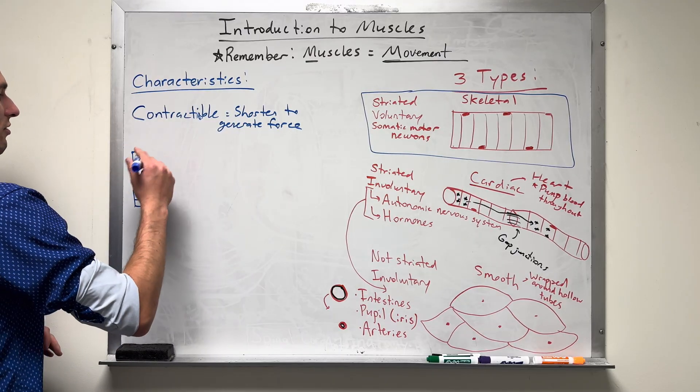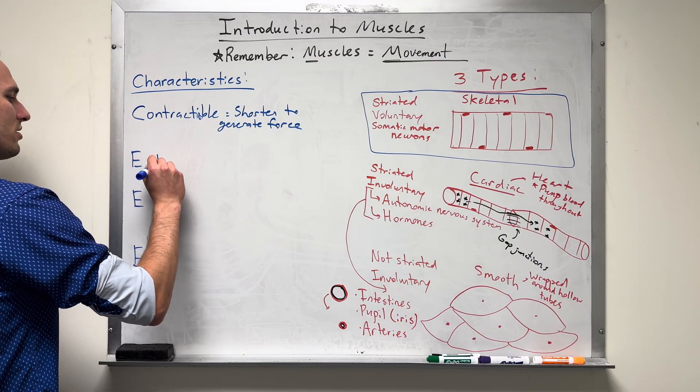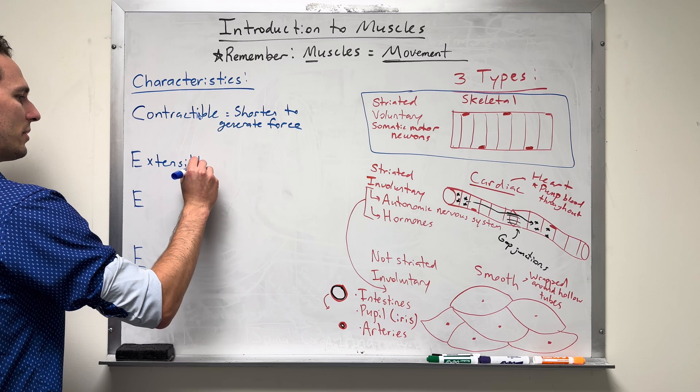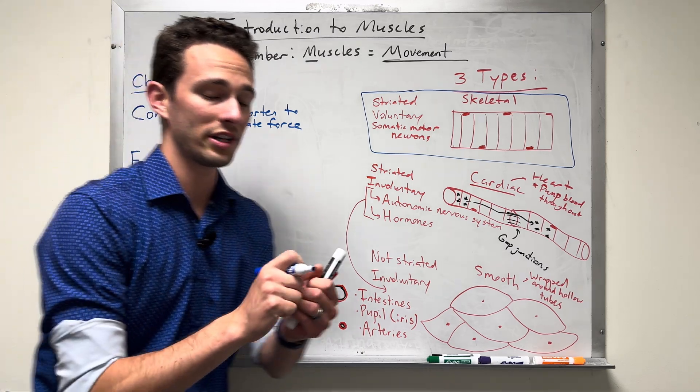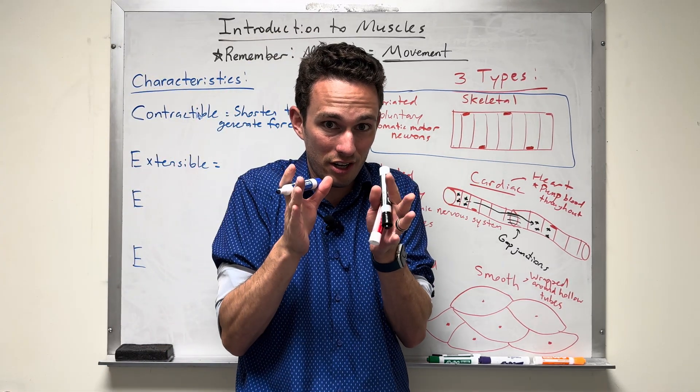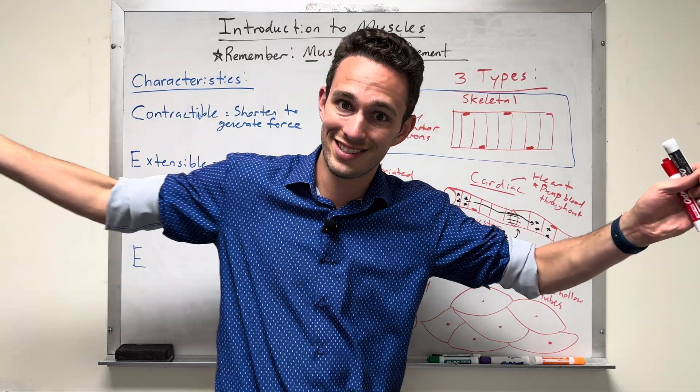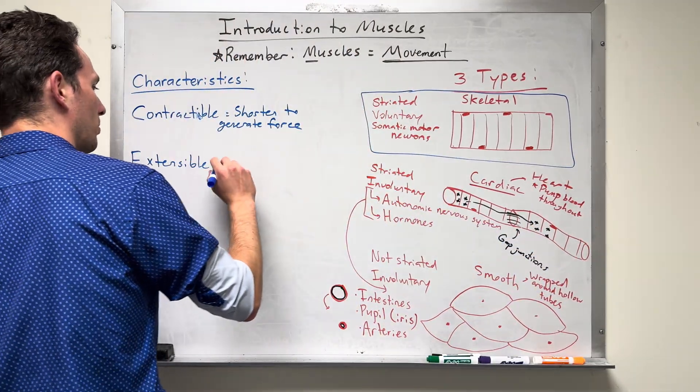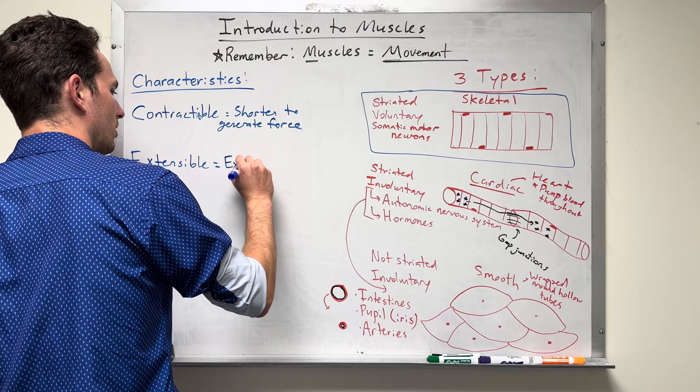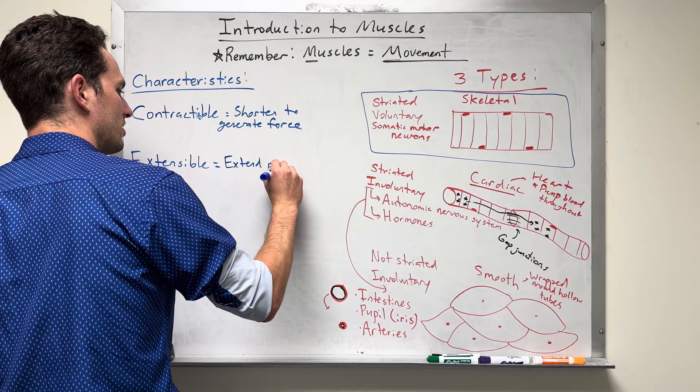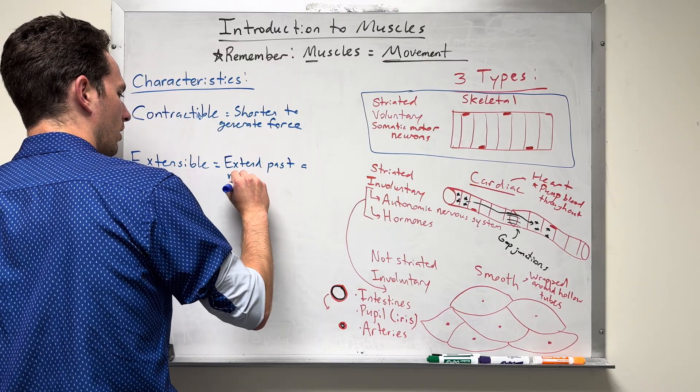Secondly, we also have muscle cells that are extensible. What does that mean? Well, just like an accordion, instead of being just contracted all the time, what can an accordion do? It can extend past a resting state. So extensible means it's able to extend past a resting state.